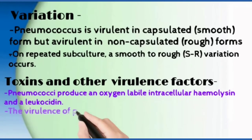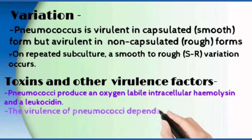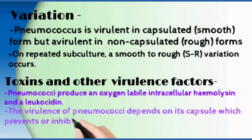The virulence of pneumococci depends on its capsule, which prevents or inhibits phagocytosis.